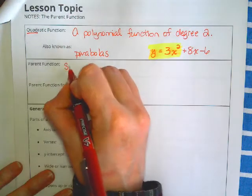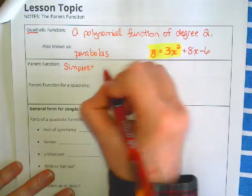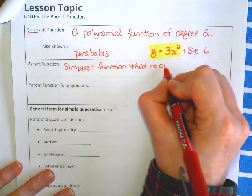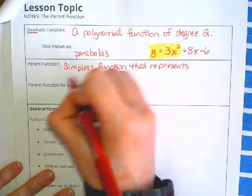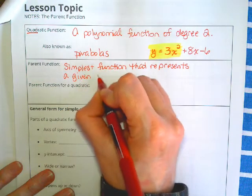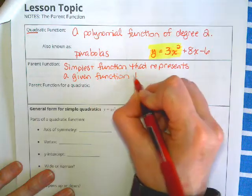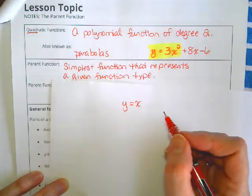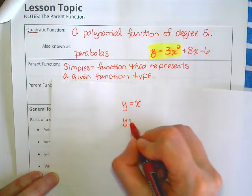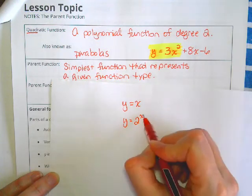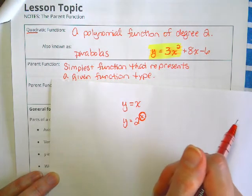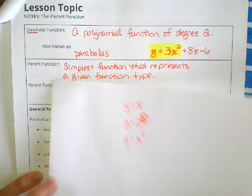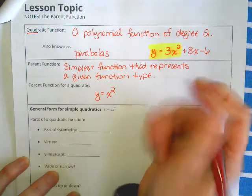So a parent function is the simplest function that represents a given function type. We have studied lines this year, that kind of function. y equals x is the parent function. We've studied exponential functions. Here's an example of an exponential parent function. Remember exponential functions have an exponent that is a variable. And now we are studying quadratic functions.